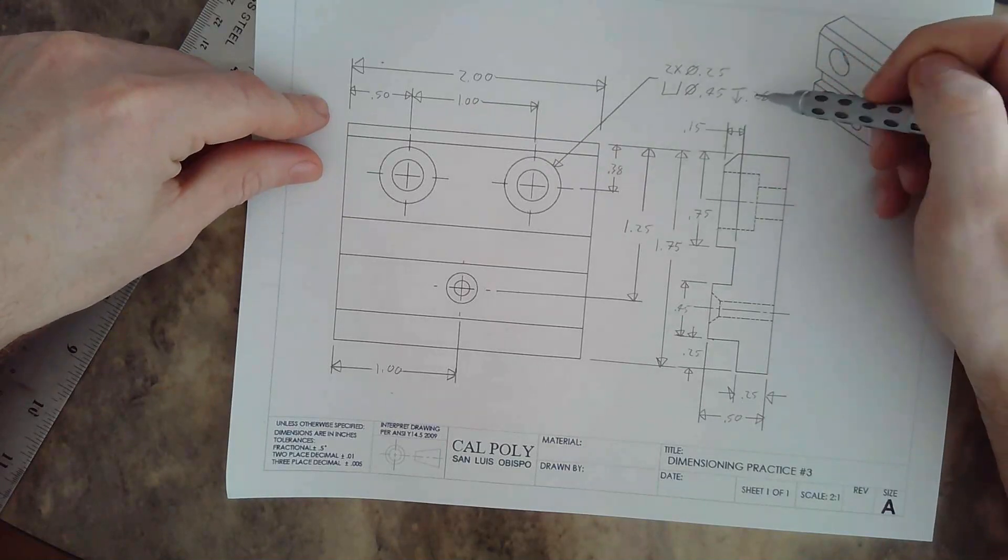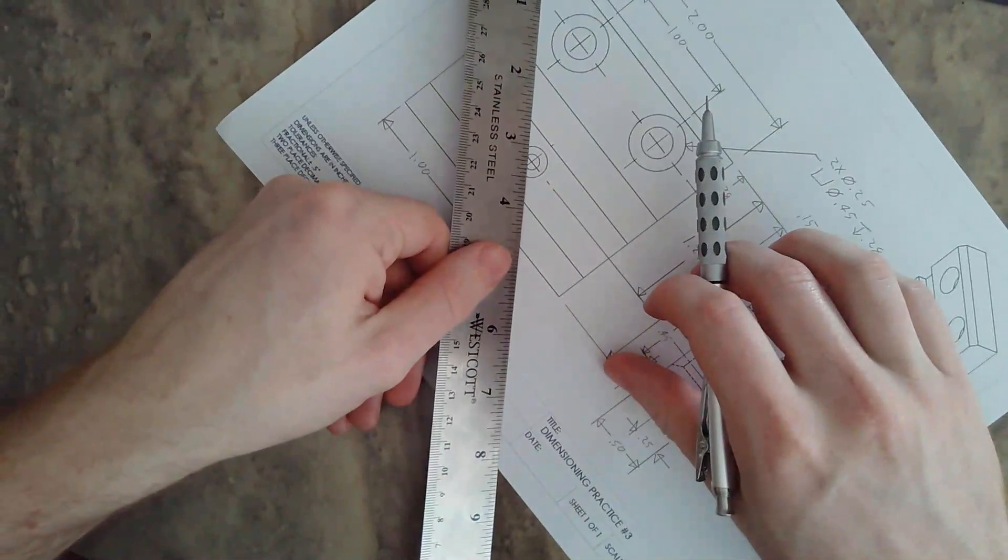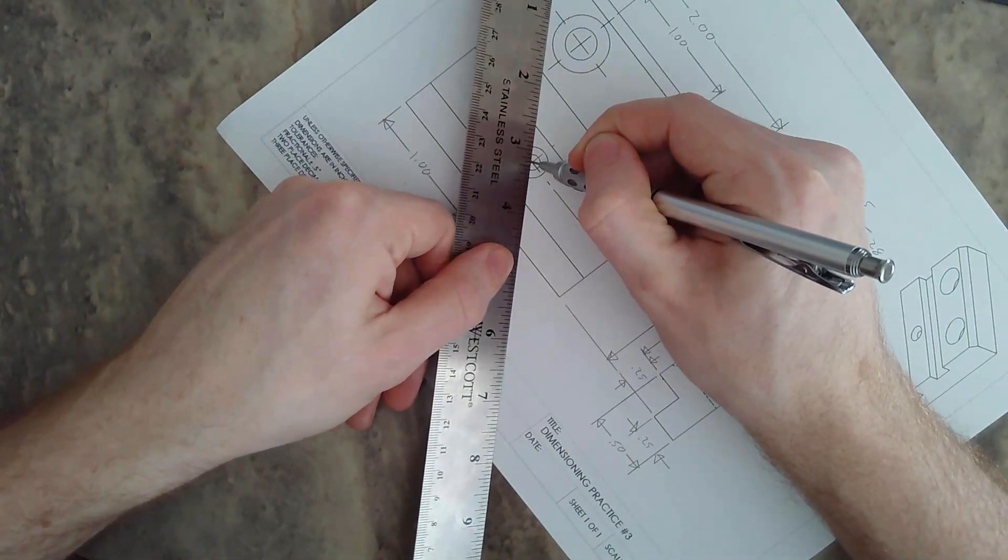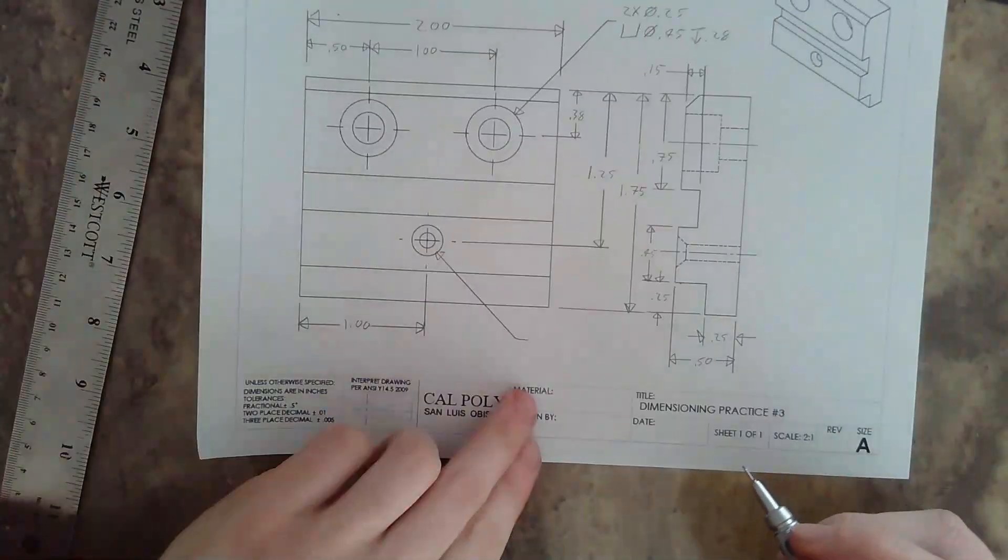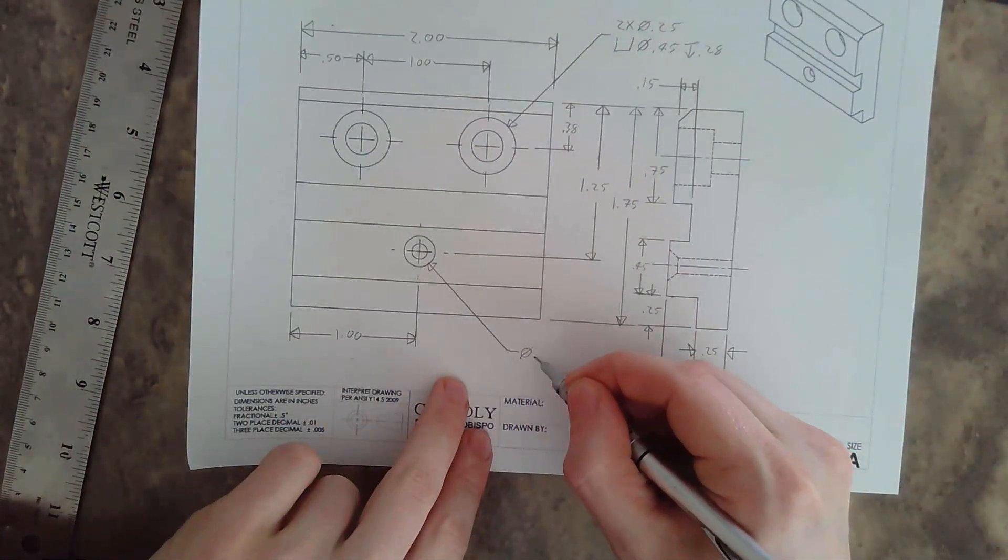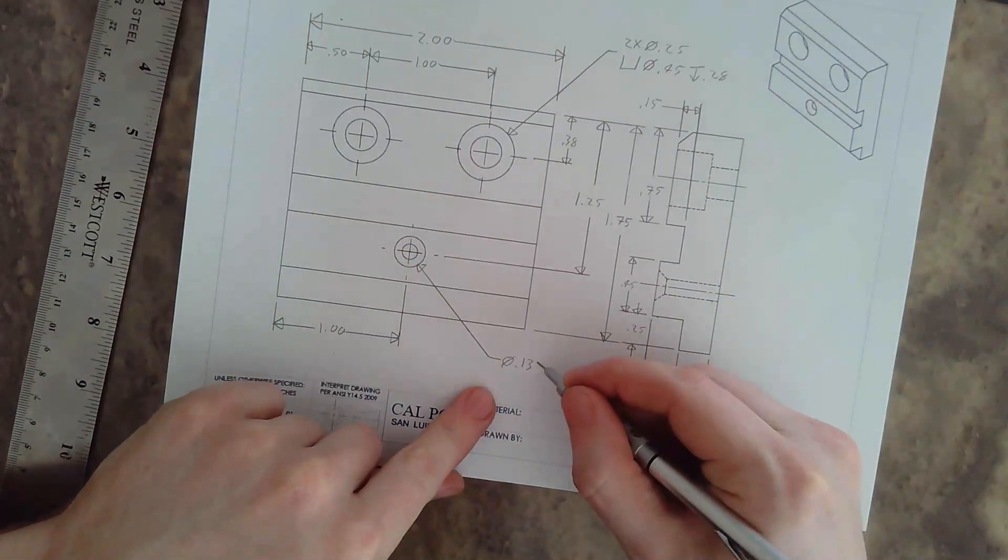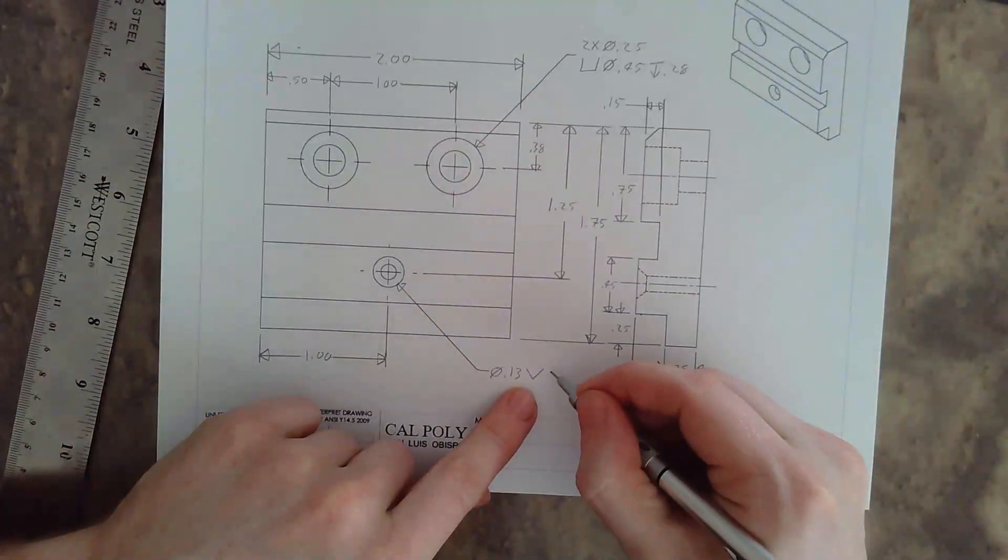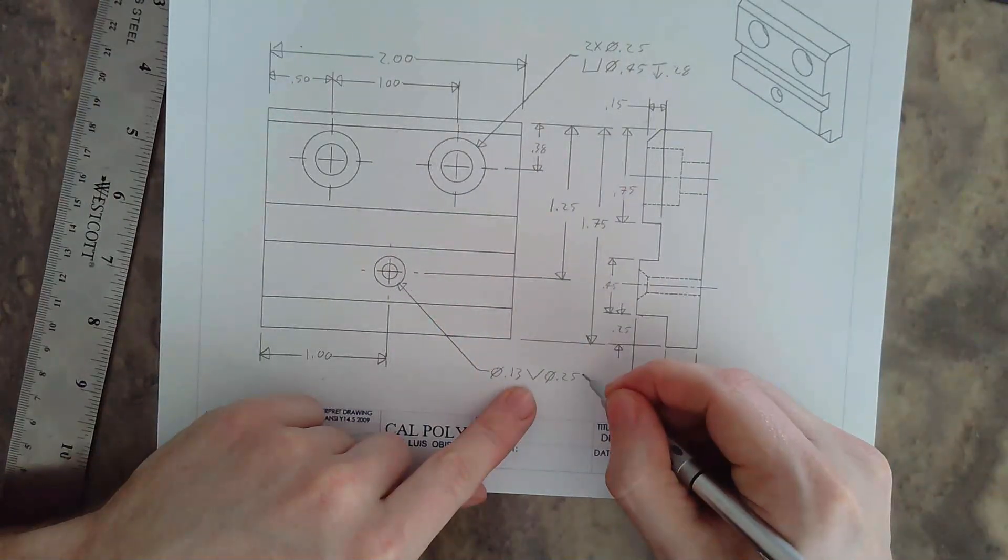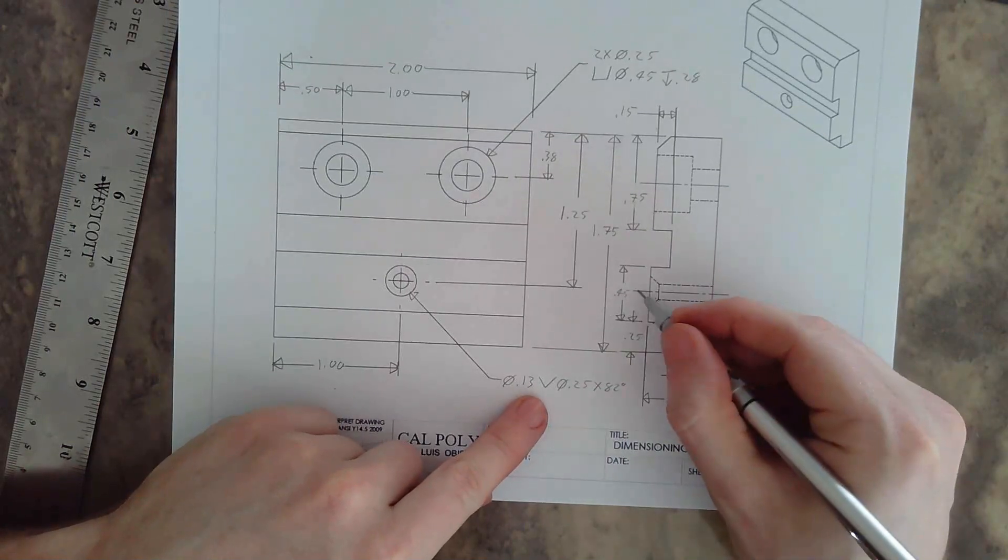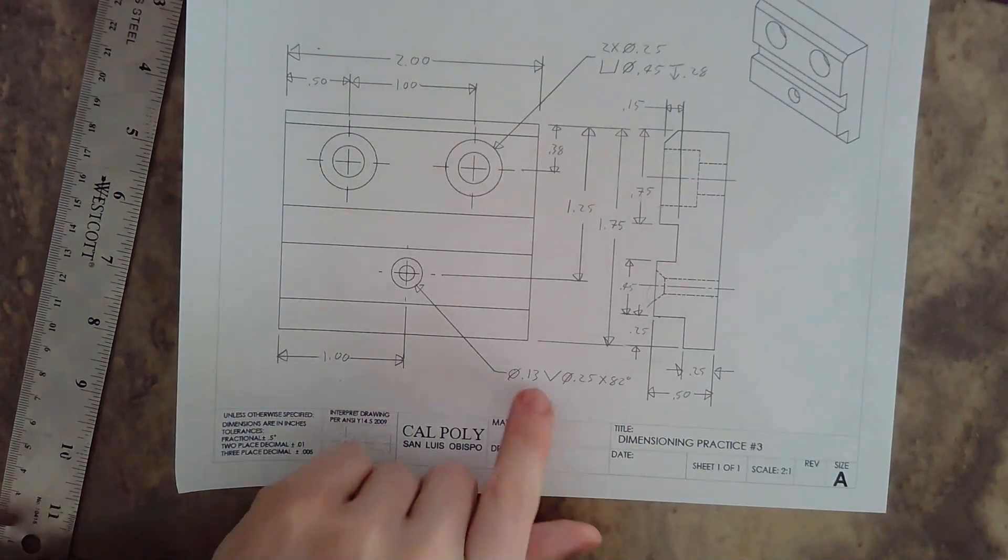Down here for the countersunk hole, we have our same dimension line coming from the center, pointing towards the center, coming off the outside here. We're going to say diameter of 0.13—that's the small diameter again, the one that goes all the way through. Then we say countersunk, which is like a spread-out V, to a diameter of 0.25, which is this top diameter here, that outside circle. Then we write by 82 degrees. That 82 degrees is from the center line to the outside right here. That is the countersunk callout.